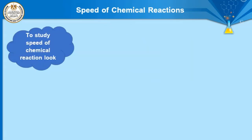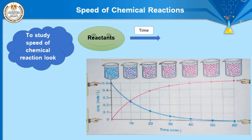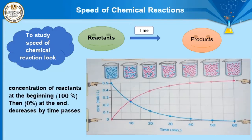Now we will talk about the meaning of the speed of the chemical reaction. To study it, consider the picture: there is a reactant that, after a period of time, forms products. At the beginning of the chemical reaction there is only reactant and no product. So the concentration of reactant at the beginning equals 100%, while the concentration of product equals zero.